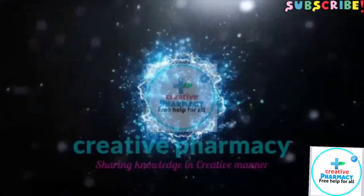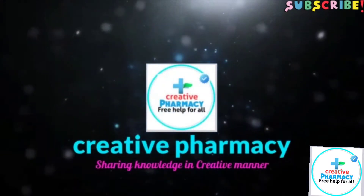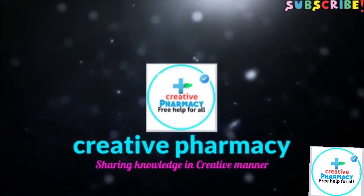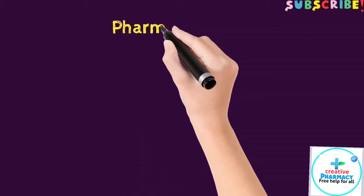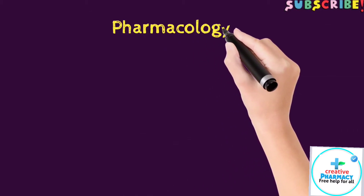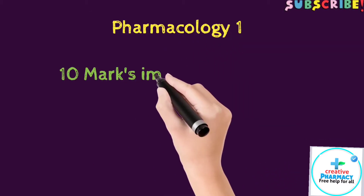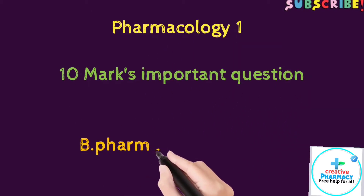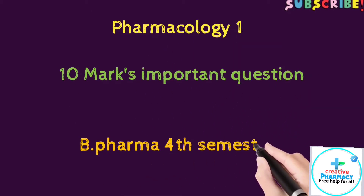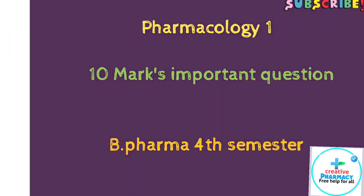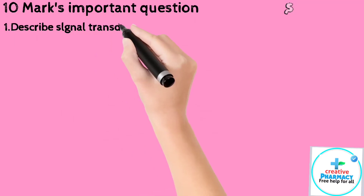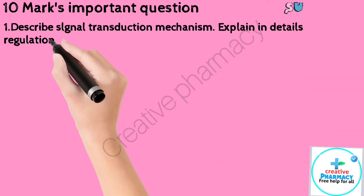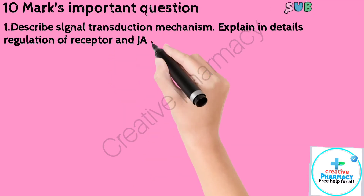Hello friends, is video mein hum Pharmacology 1 ke important questions discuss karenge, toh achche se sare questions solve karke taiyar kar lein. Question 1: Describe the signal transduction mechanism. Explain in detail the regulation of receptors and JAK-STAT binding receptors.